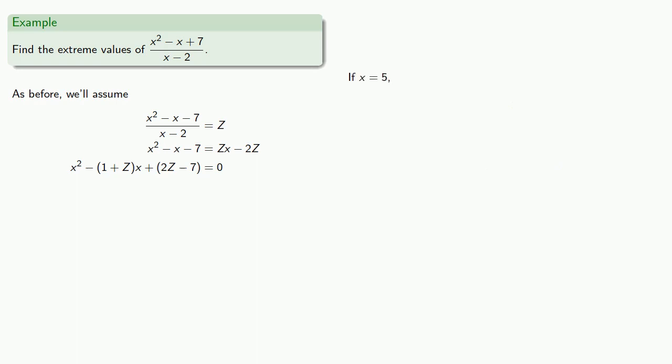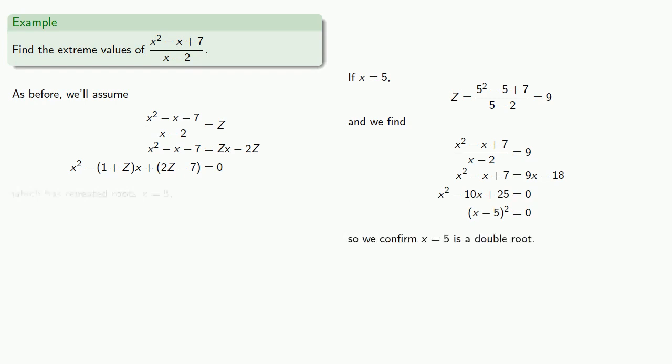our z value is equal to 9. And we want to find the solution to. We confirm that x equals 5 is a double root, and so this is going to correspond to one of our extreme values.